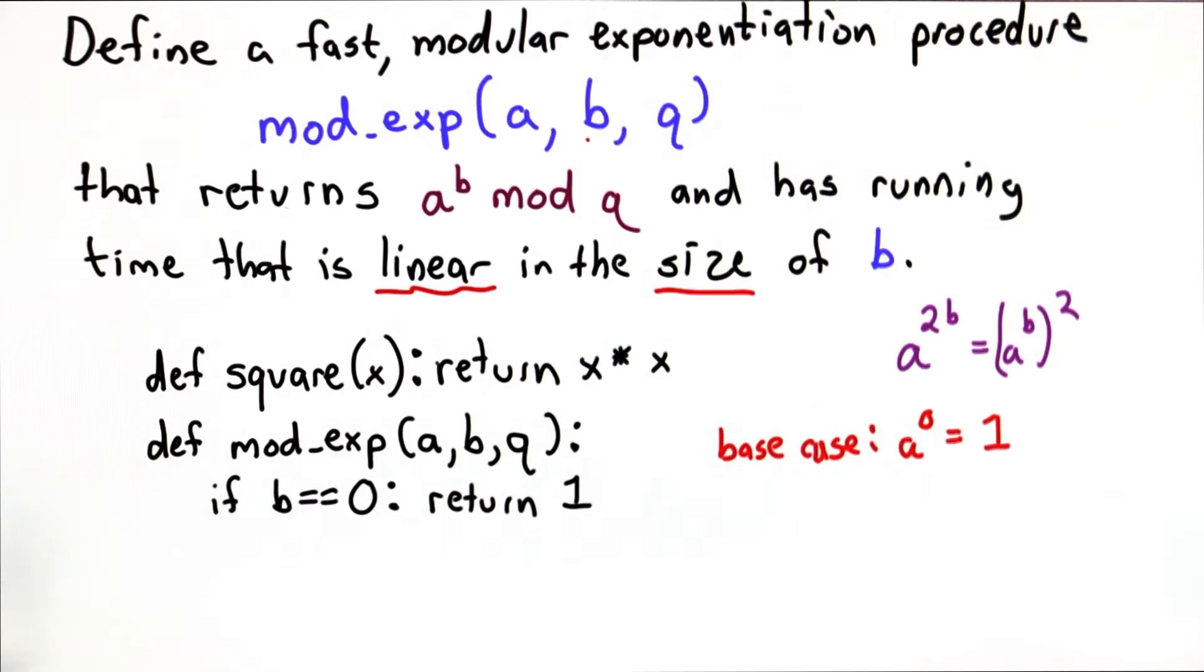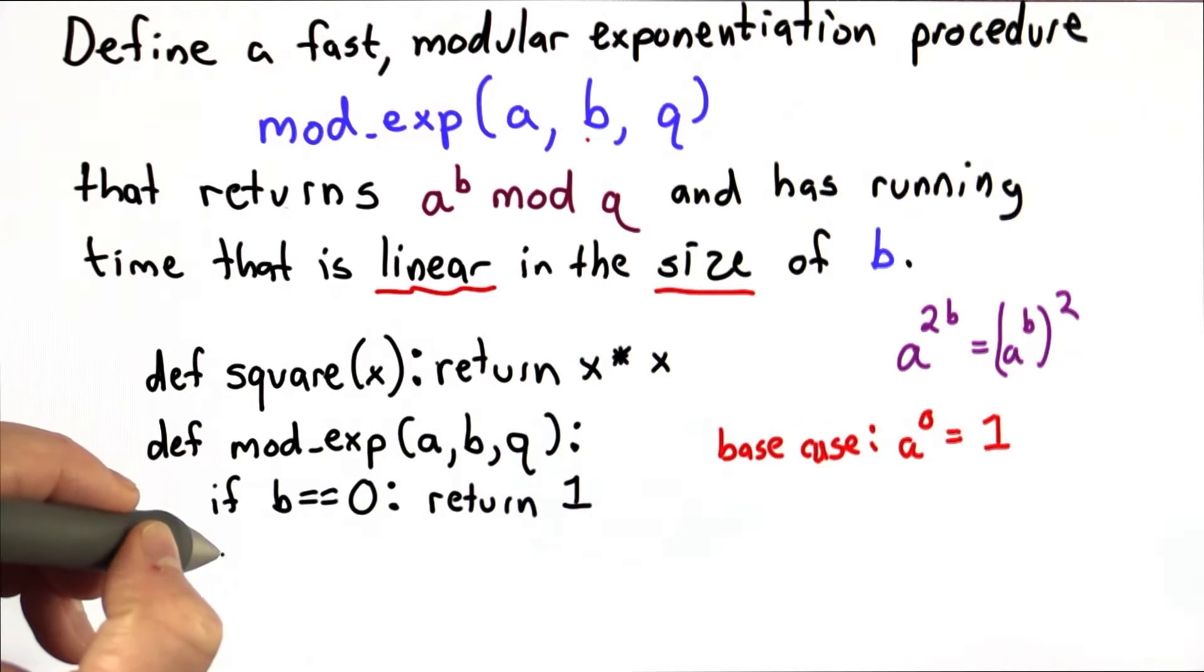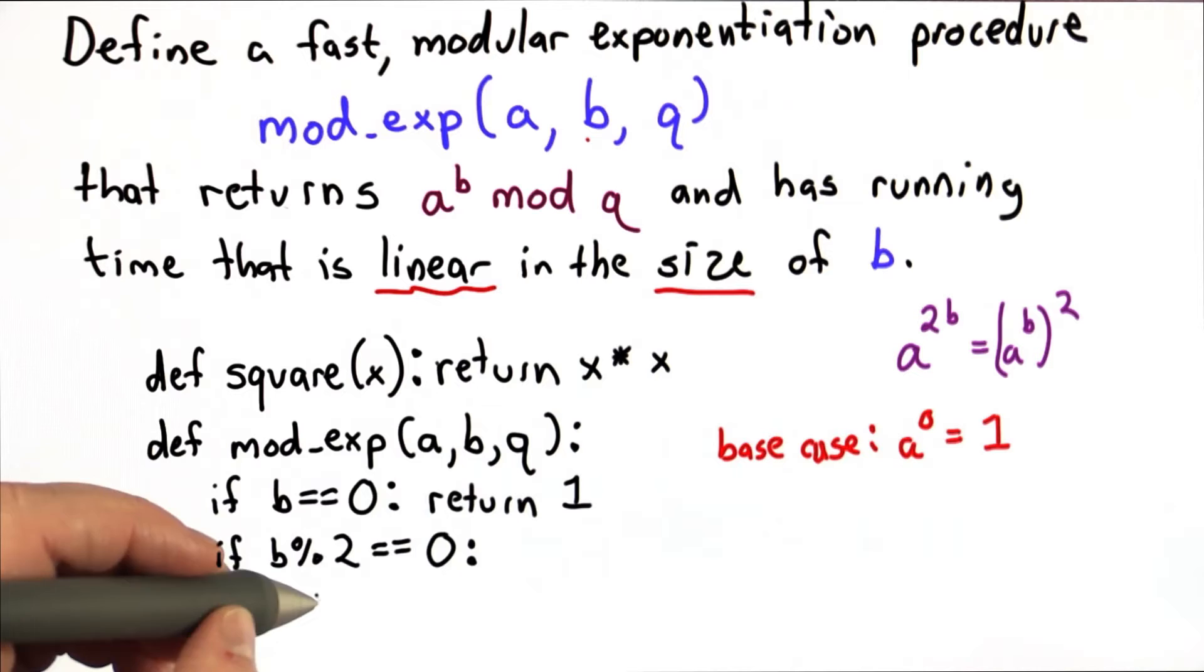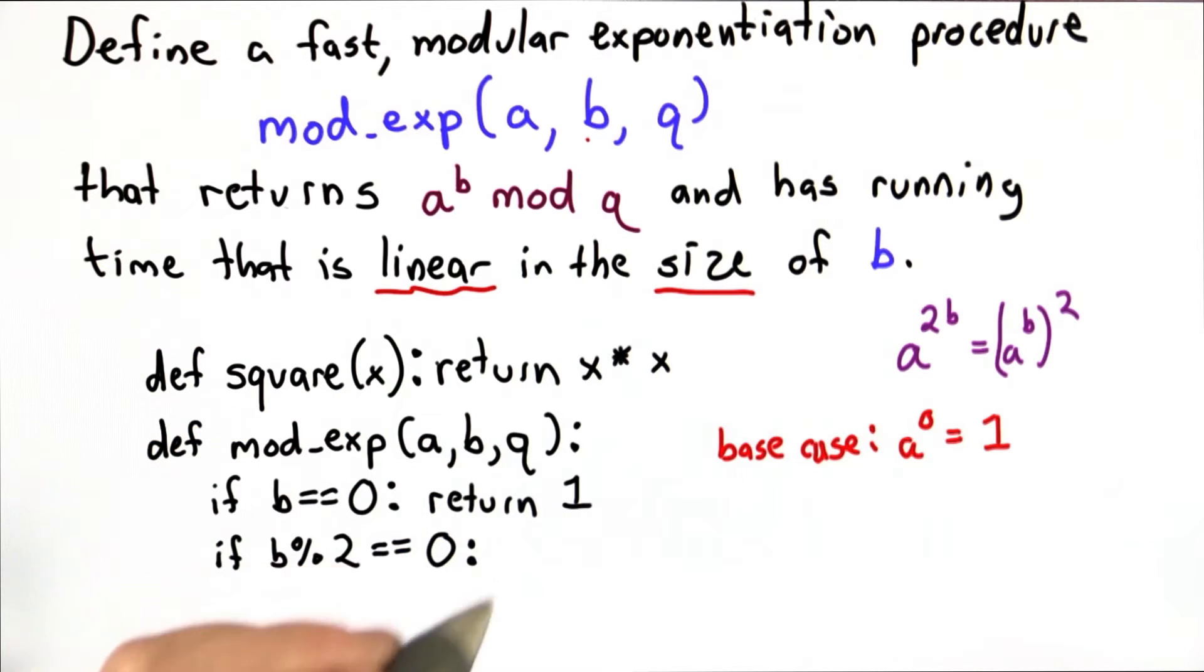If b is not 0, well then we want to check if it's divisible by 2. If it's divisible by 2, we can do this transformation. Then the result is the square of the modular exponentiation of a to the b divided by 2.